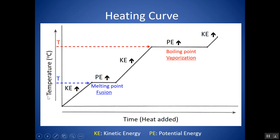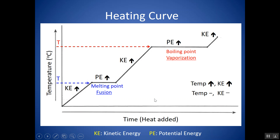We can also talk about what's happening to the different types of energy along this heating curve. Anytime the temperature is going up, your particles are moving faster, so kinetic energy goes up. Temperature is directly related to kinetic energy — temperature is actually the measure of average kinetic energy. Potential energy is changing when you have your phase changes on the flat lines, because kinetic energy is not changing since temperature is constant. All your energy is not making the particles move faster; it's breaking apart the intermolecular forces between them, changing the condition or potential energy.